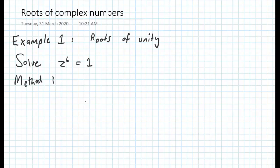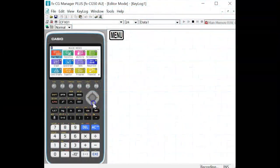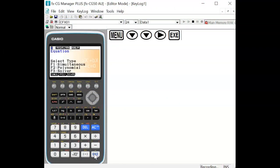The first method involves using a graphics calculator to determine the roots. To find the roots of unity using the Casio graphics calculator, we'll use the polynomial solver within the equation menu.